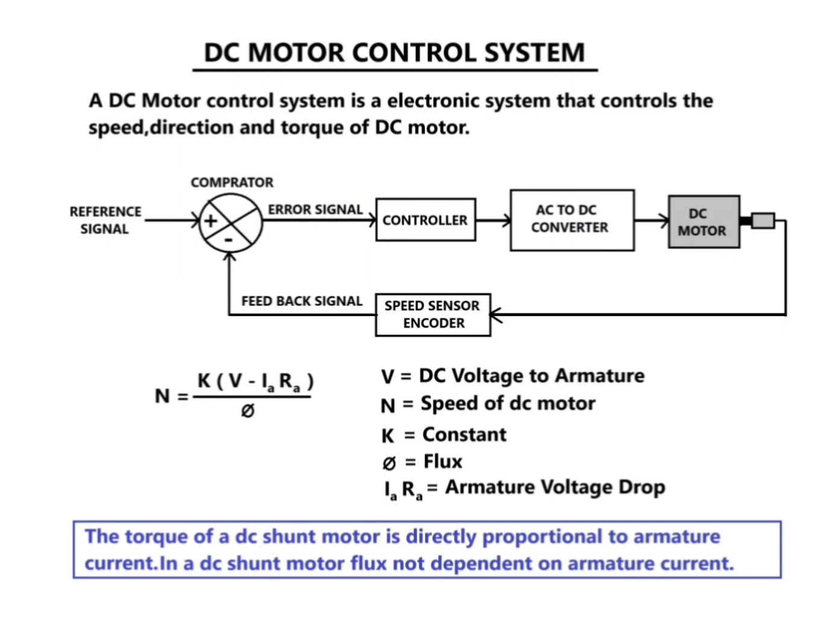The block diagram given for the system: a reference signal is compared with feedback from the encoder connected to the DC motor. The error signal is given to the controller, and the controller controls the AC to DC output voltage to the motor.